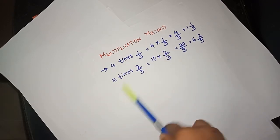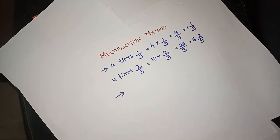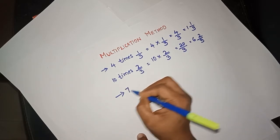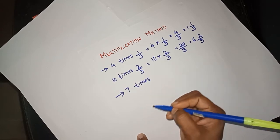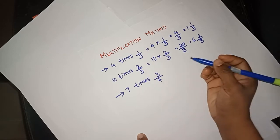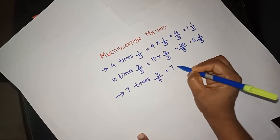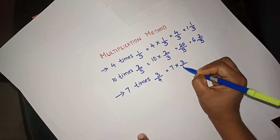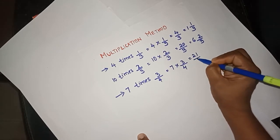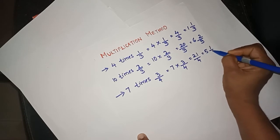Next question. A bottle can hold 3/4 liters of milk. How many liters of milk is there in 7 such bottles? One bottle has 3/4 liters of milk. That means there are 7 bottles of milk. We get 7 times 3/4, which equals 21/4.